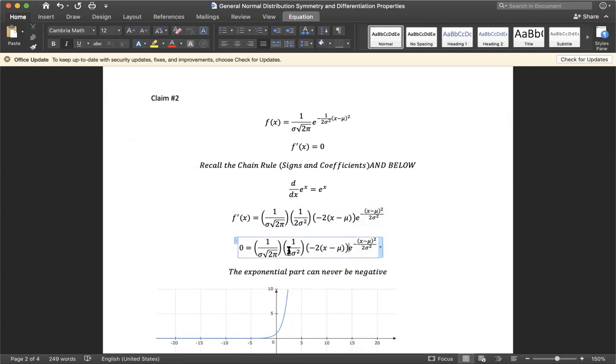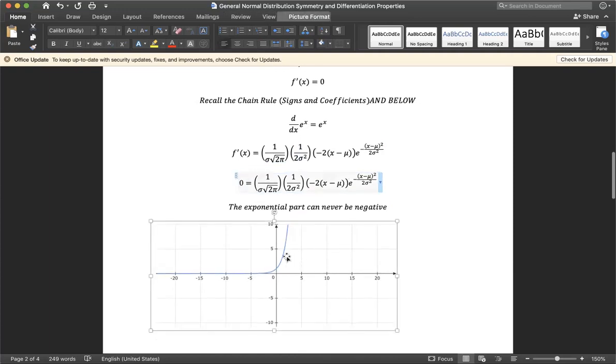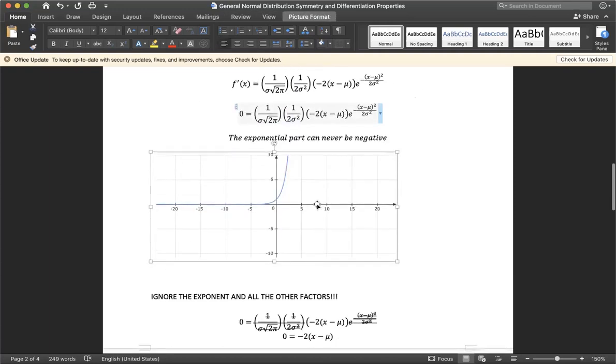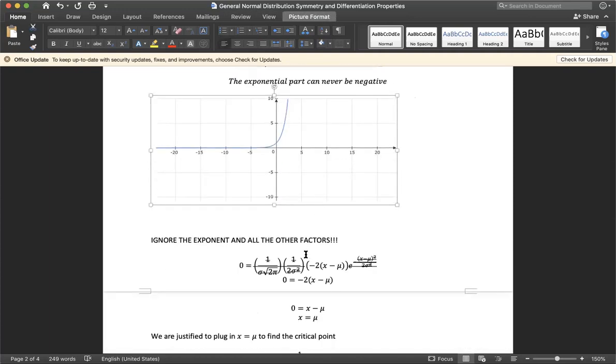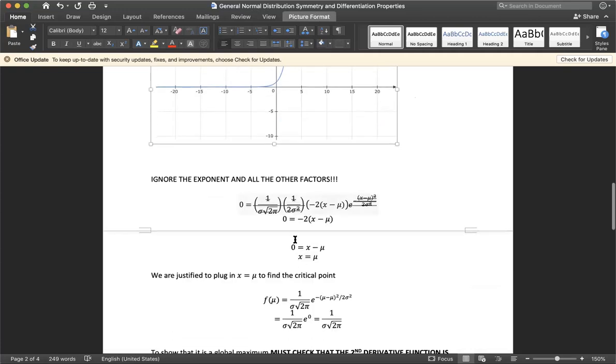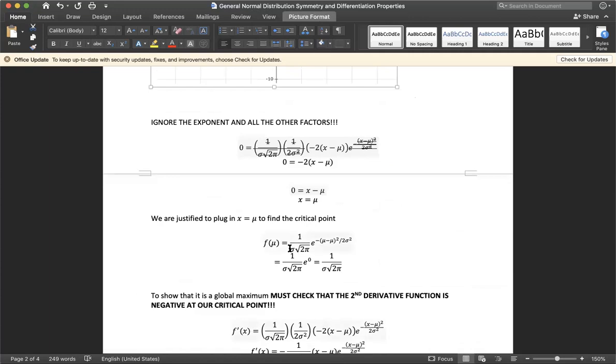Now to solve this for equal to zero, we can ignore the constant terms, which will cancel out. An exponential term can never be negative, as we know through this graph, so all you have to care about is the linear term. Solving this we get that x equals the mean.